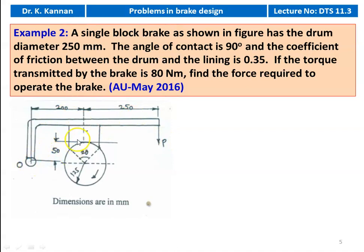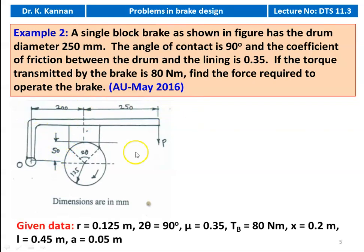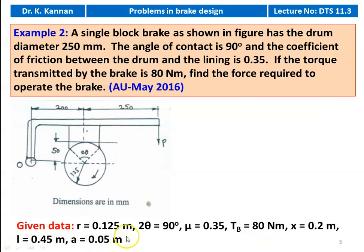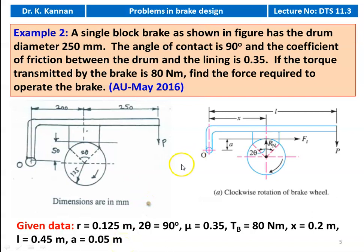O is the fulcrum. C is the center of the brake block, and we have an offset of 50 millimeter. Total length of the lever equals 450 millimeter. The data given: R = 0.125 meter, 2θ = 90 degrees, μ = 0.35, Tb = 80 Newton meter, X = 0.2 meter, L = 0.45 meter, and A = 0.05 meter. We compare the diagram and write down the given data.